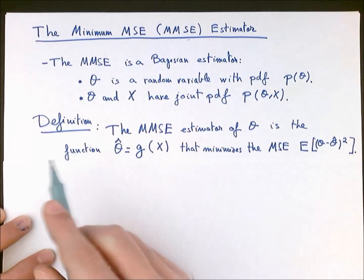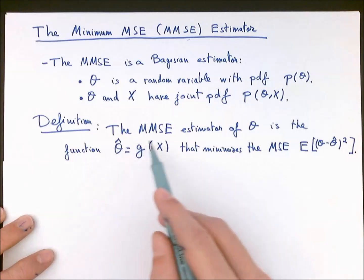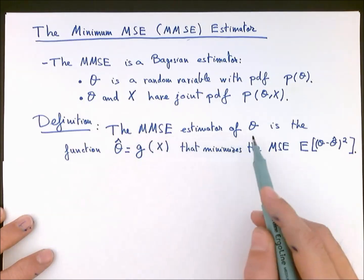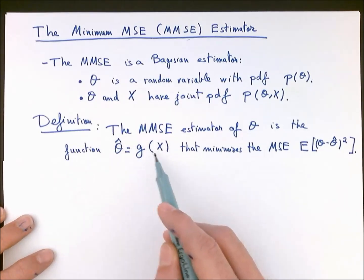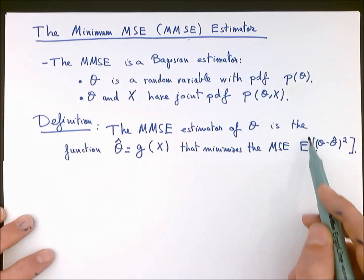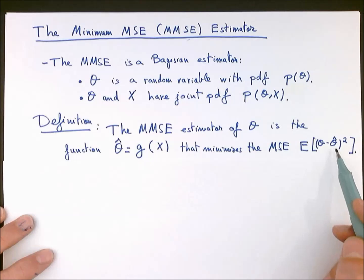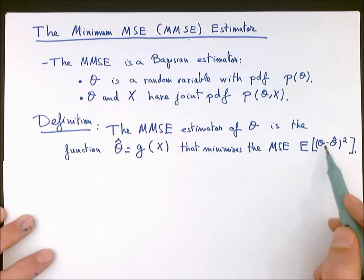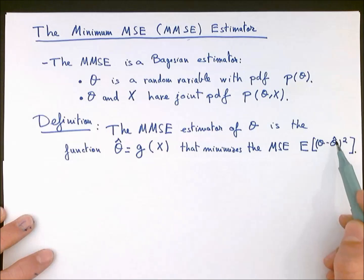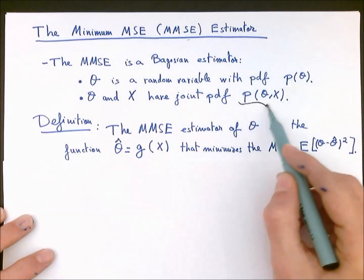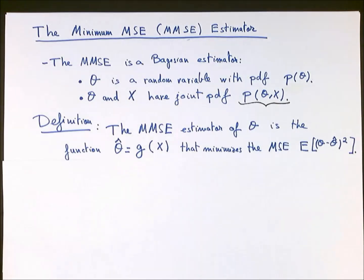As the name indicates, the minimum mean squared error estimator of z is a function of the data which minimizes the mean squared error — the expectation of the squared estimation error. Notice that this expectation must be taken both with respect to the true parameter, since it is a random variable, and the estimator, which is a function of the data. So this expectation is taken with respect to the joint probability distribution p of theta and x.